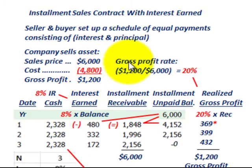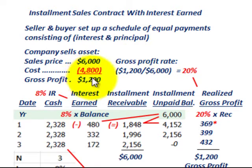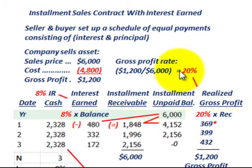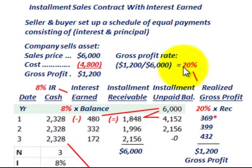We have to first figure out our gross profit rate. That would simply be the gross profit of $1,200 divided by the sales price of $6,000, which is going to give us a gross profit rate of 20% on this contract.